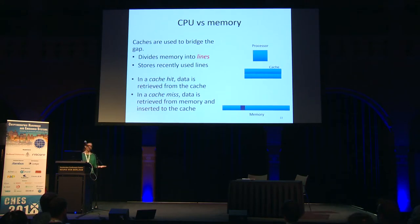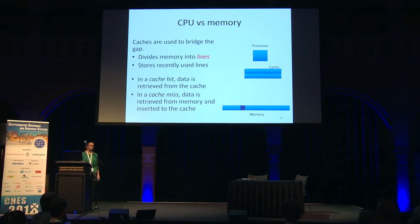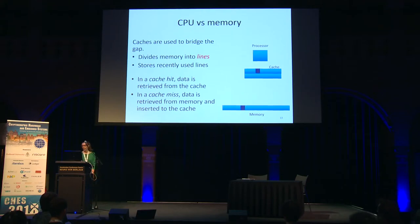The cache divides memory into cache lines. When the processor accesses data, the cache brings it to the processor and stores a copy. On subsequent accesses to the same data, the processor reads directly from the cache, which is much faster.